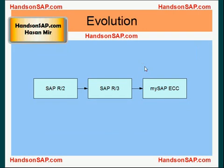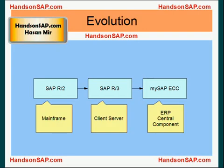This is the evolution of SAP. SAP started with SAP R2, which became SAP R3, which eventually changed to MySAP ECC. SAP R2 was mainly designed for mainframe computers — large, huge computers. Then it changed to SAP R3, which catered to client-server environments. The latest offering is MySAP ECC, which stands for ERP Central Component.